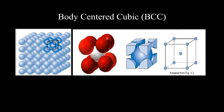You can note that the upper layer has atoms 1, 2, 3, 4, and then 5, 6, 7, 8 on the back. The central body atom is attached to all 8 corner atoms. This means the Coordination Number for the body-centered cubic structure is 8.